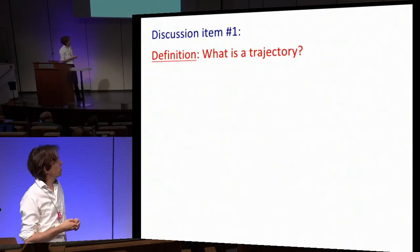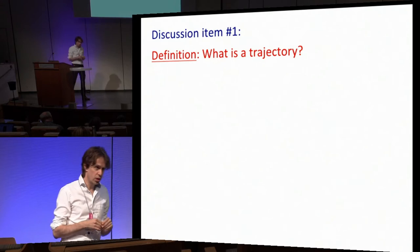The first discussion item was very logical: what is a trajectory? Let's first define it. There was lots of discussion about how to do that because there is really no clear definition in the textbooks, at least not in the context of single cell omics.